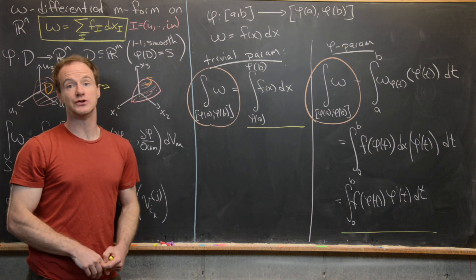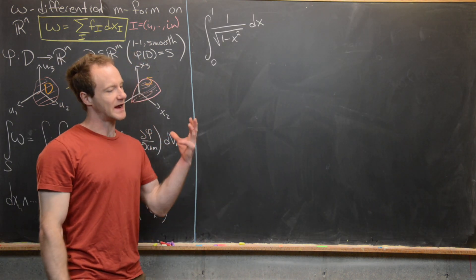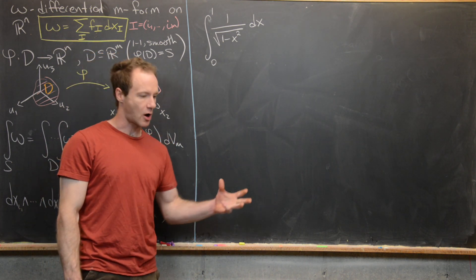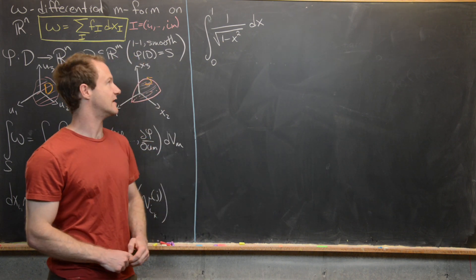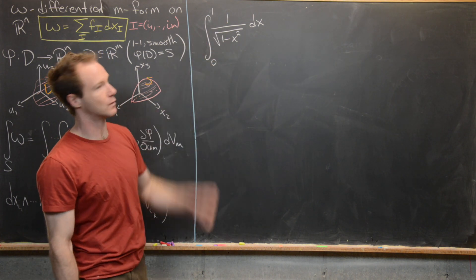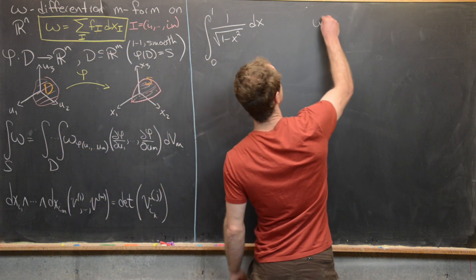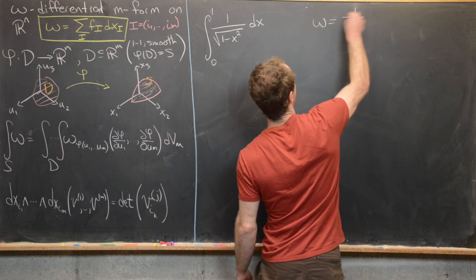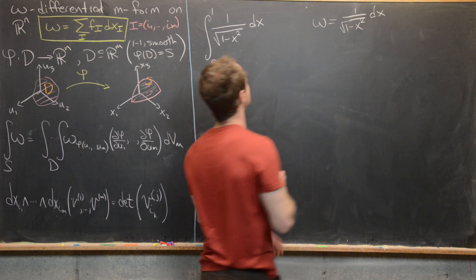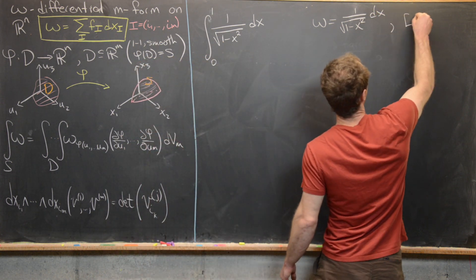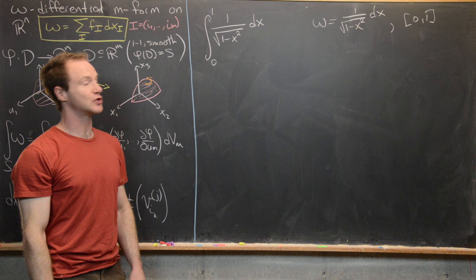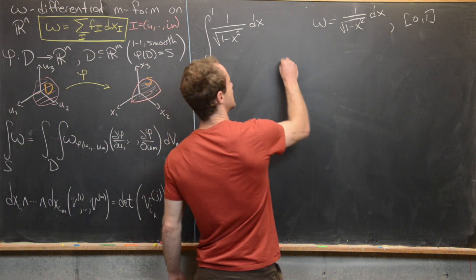To finish this video, we'll evaluate a calculus 2 integral by writing it as an integral of a differential 1-form on R1 and reparametrizing. We want to integrate 1 over the square root of 1 − x² from 0 to 1. We envision this as the differential 1-form omega = 1/√(1 − x²) dx over the space [0, 1], and reparametrize to simplify.